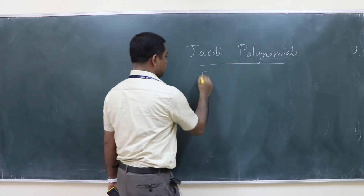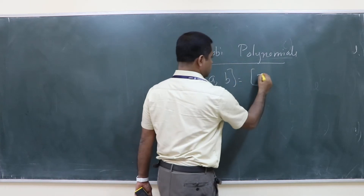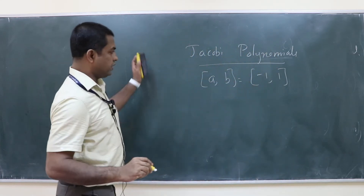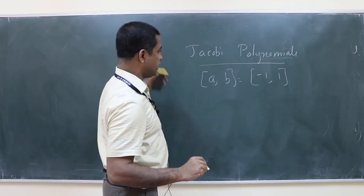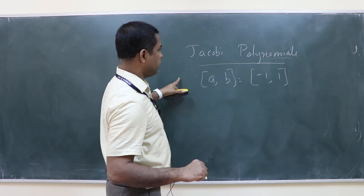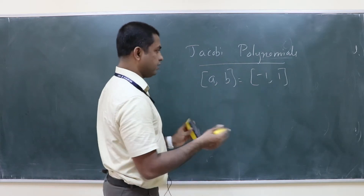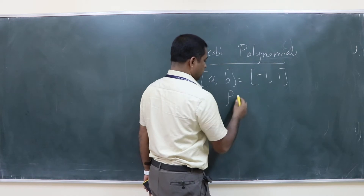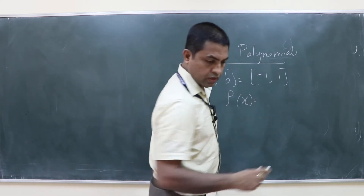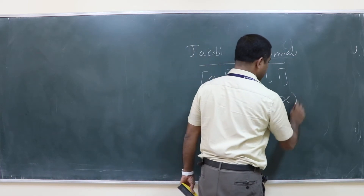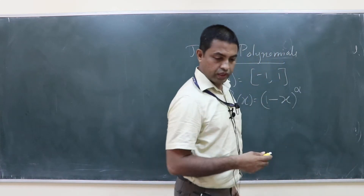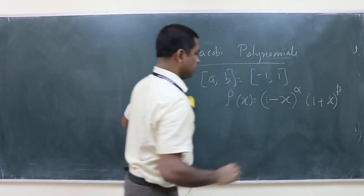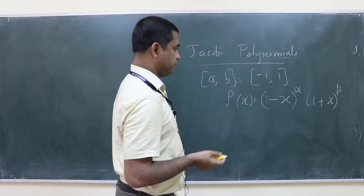In this case, what is the range? It is minus 1 to 1. For infinite integrals we have the full-line case, semi-infinite is the generalized Laguerre, and now we are talking about Jacobi polynomials which cover minus 1 to 1 — any finite interval can be mapped into minus 1 and 1. Here ρ(x) = (1 − x)^α (1 + x)^β, with two parameters α and β.